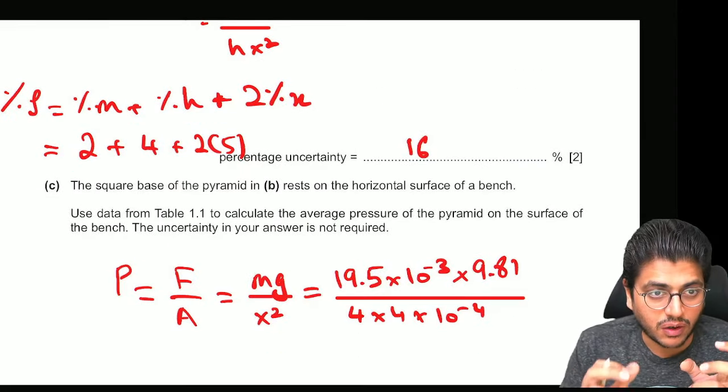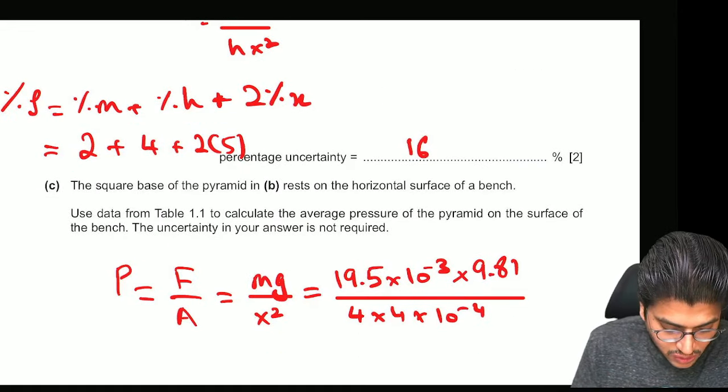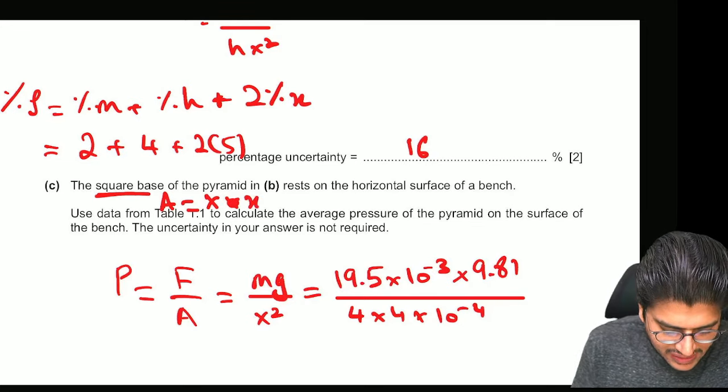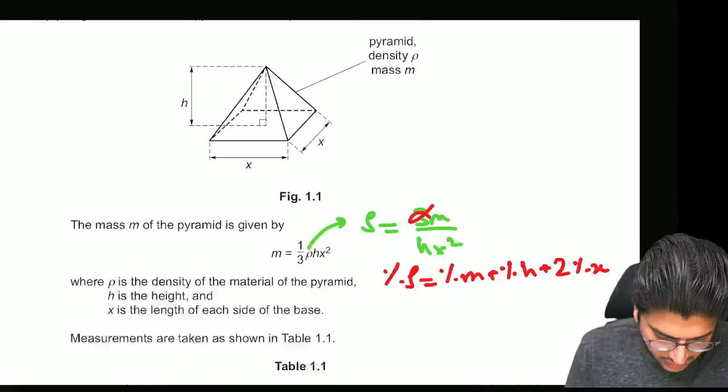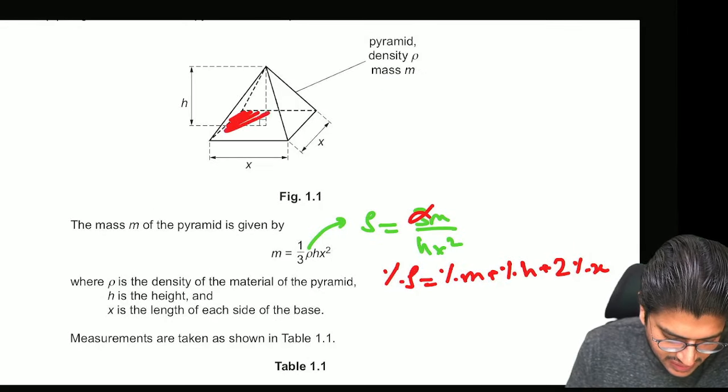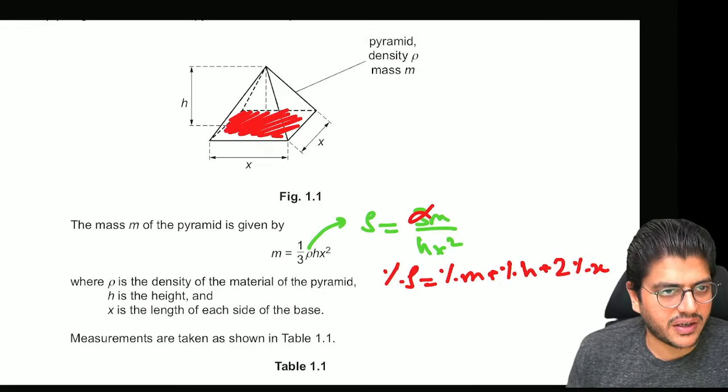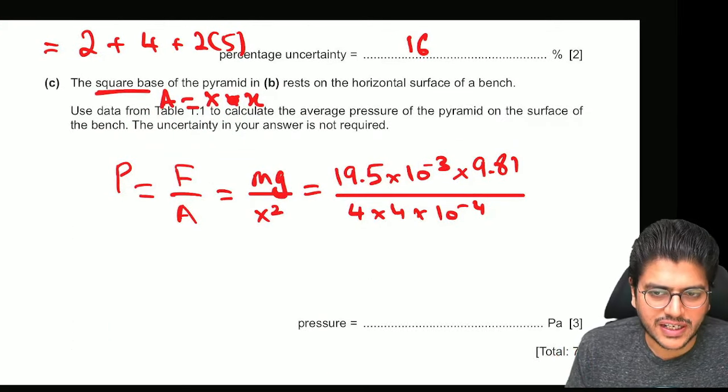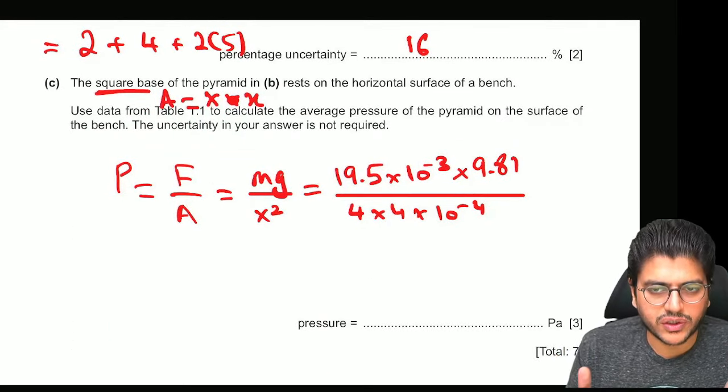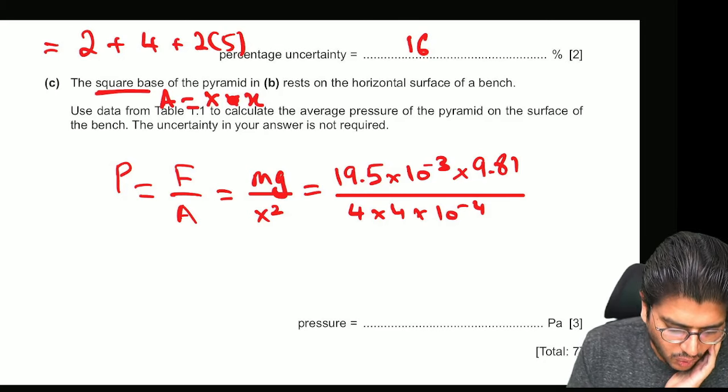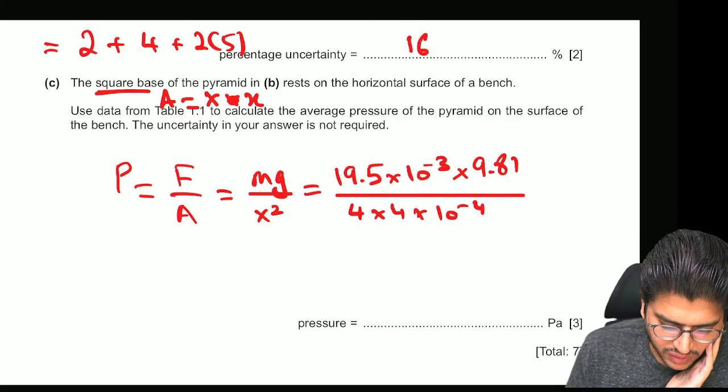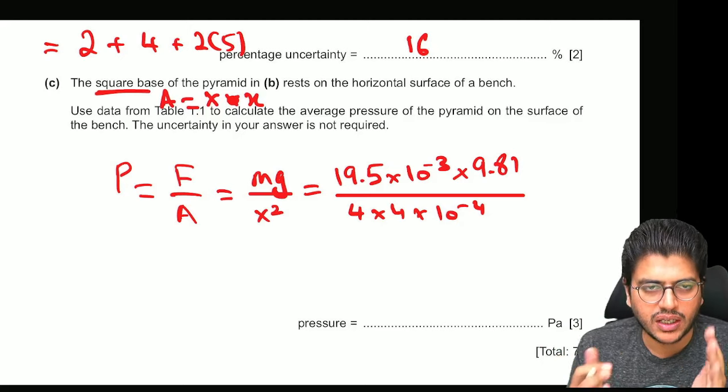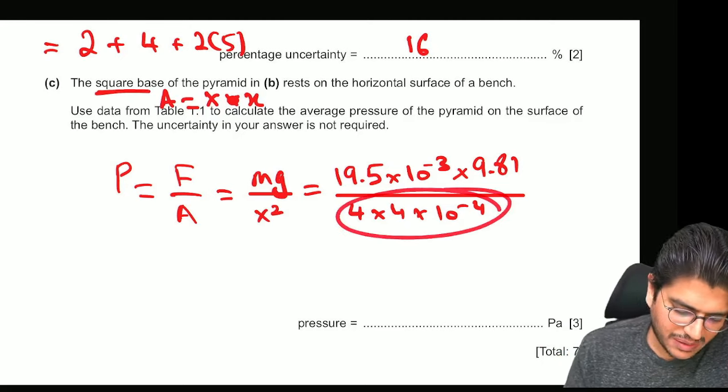Because it's a square base, you know that the area is going to be X into X. If you look at this diagram over here, they're basically asking you to calculate this area which is X square. So 4 into 10, it was 4 centimeters. So you could do 4 into 10 to the minus 2 whole square. Or you could write it as 4 into 4 into 10 to the minus 4. It's the same thing. So what I've written over here, same thing.